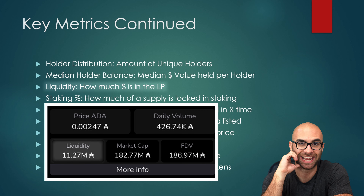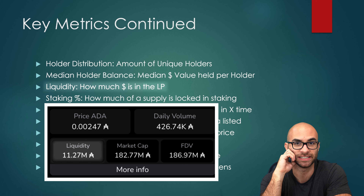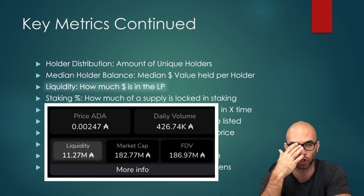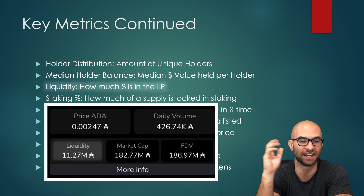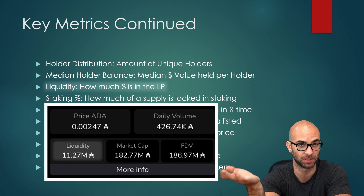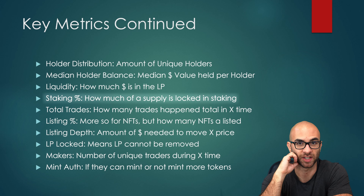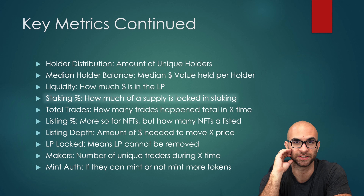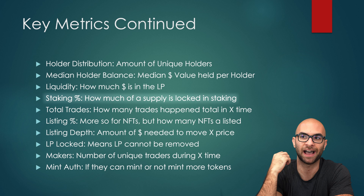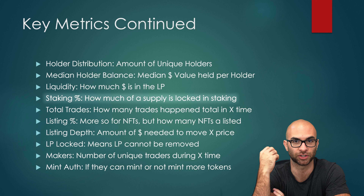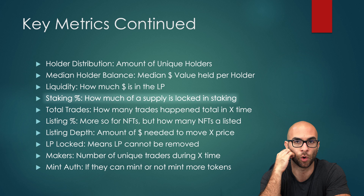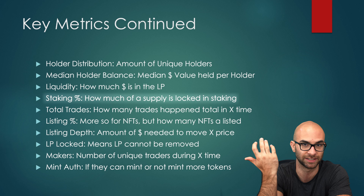Liquidity is how much money is actually in the liquidity pool. This is for decentralized exchanges, and the more liquidity, the less price impact you're going to have when you're buying and selling. It's important to have a lot of liquidity — otherwise you're not going to be able to exit your positions. Staking percentage, which you'll sometimes see on proof-of-stake chains, shows how many people actually locked up that cryptocurrency. The higher the staking percentage, the more conviction these different holders have in that token.